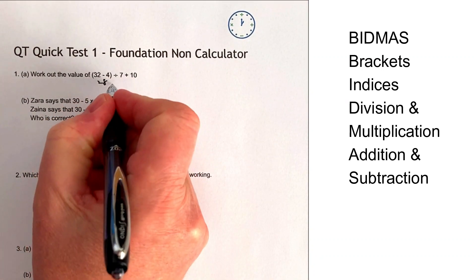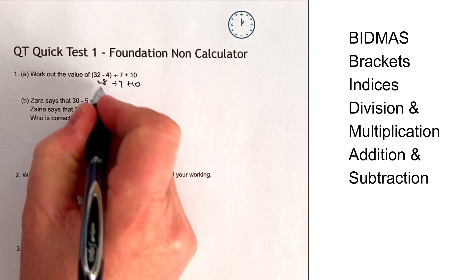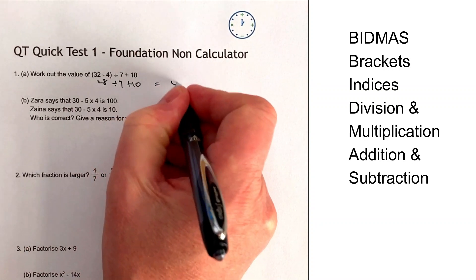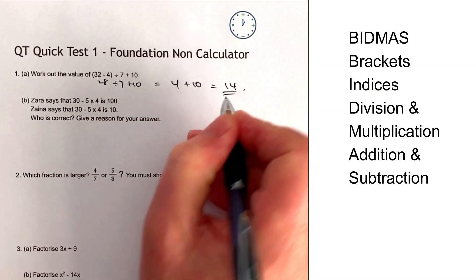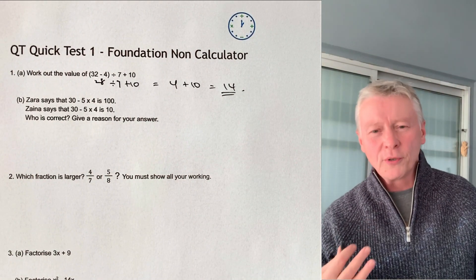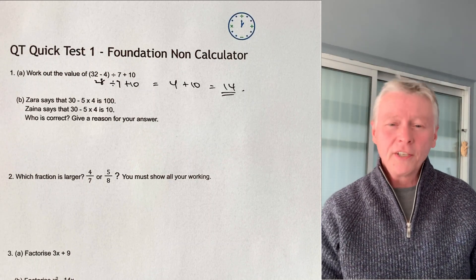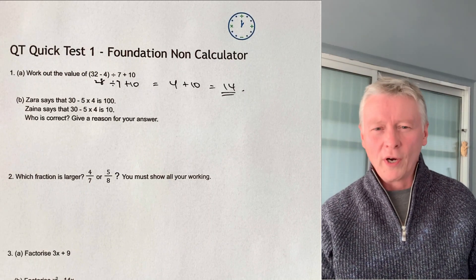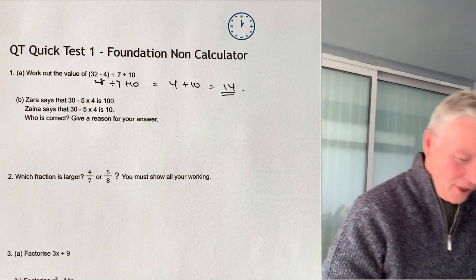So we've got then 28 divided by 7, and then plus 10. So 28 divided by 7 is going to be equal to 4, and then plus 10 means that the answer for this particular one is 14. These type of questions generally tend to appear in the first few questions on a foundation paper, usually between about question number 1 and question number 5 or 6.